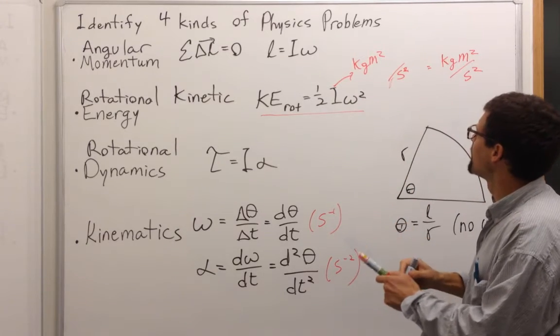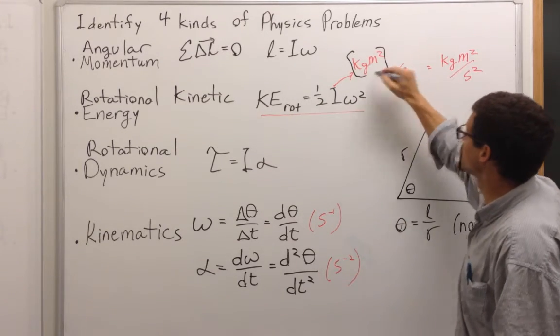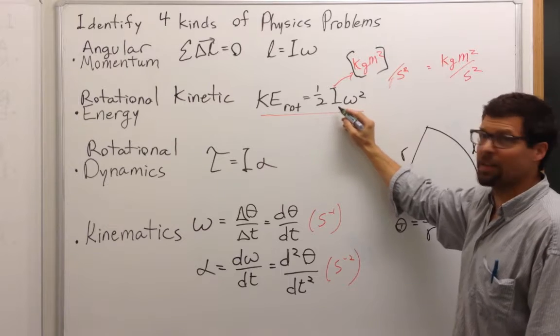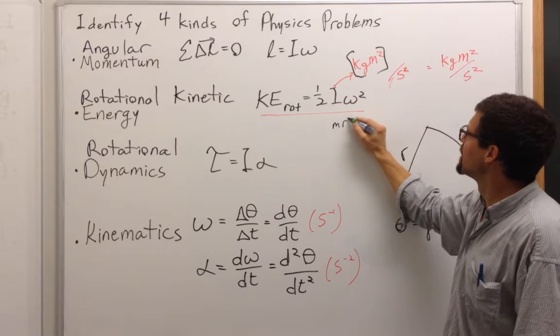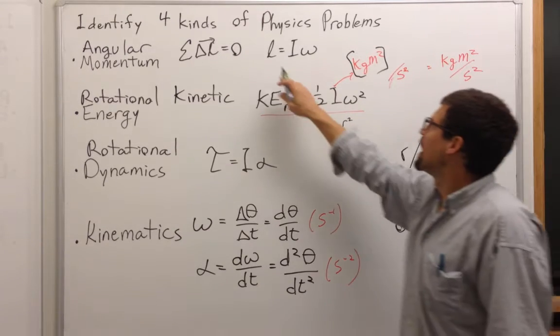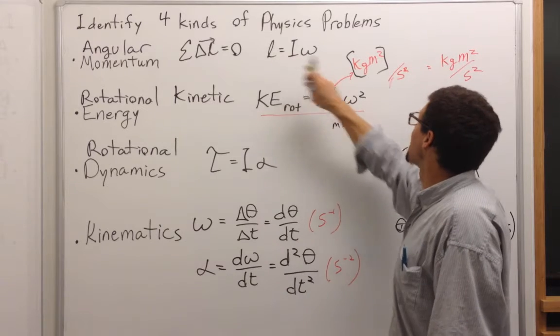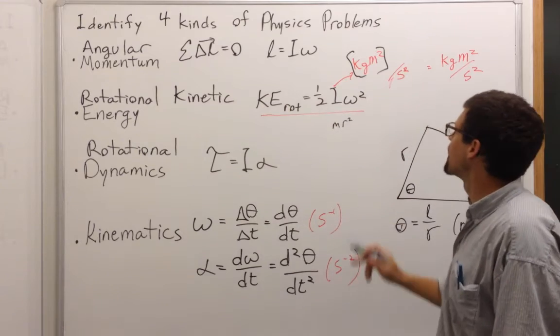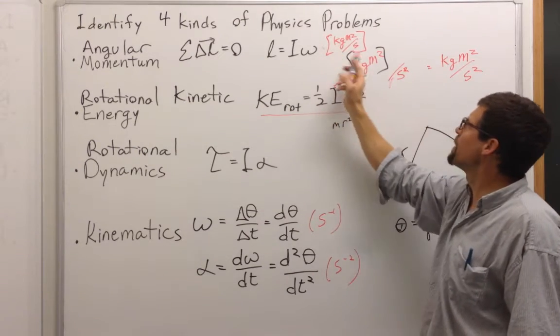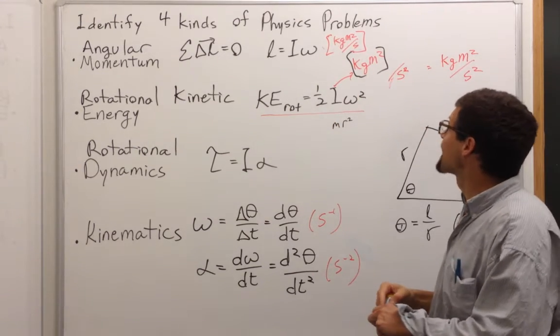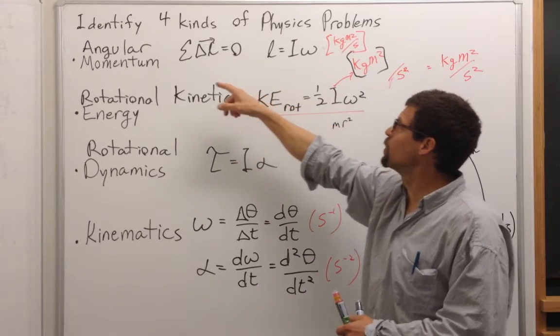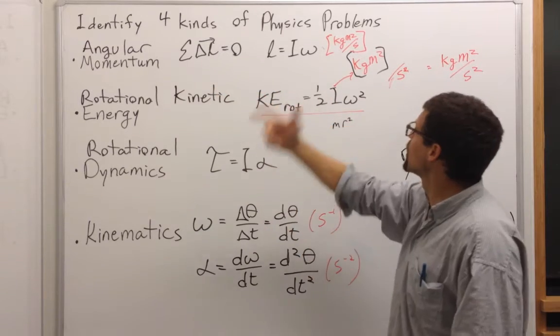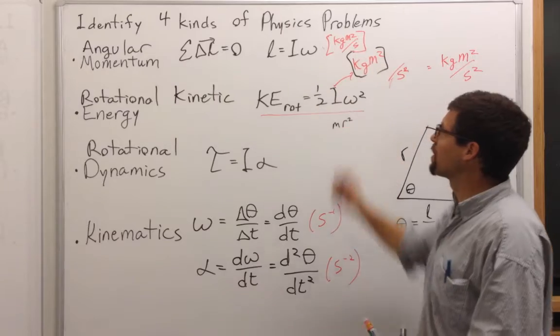So the moment of inertia is kilogram meter squared, which is nice because we said this correlates to mass times radius squared. And angular momentum is L, which is kilogram meter squared times omega, which is per second. This is going to be kilogram meter squared per second, which is not kilogram meters per second, which is regular momentum. Angular momentum has an extra unit of length in the numerator.